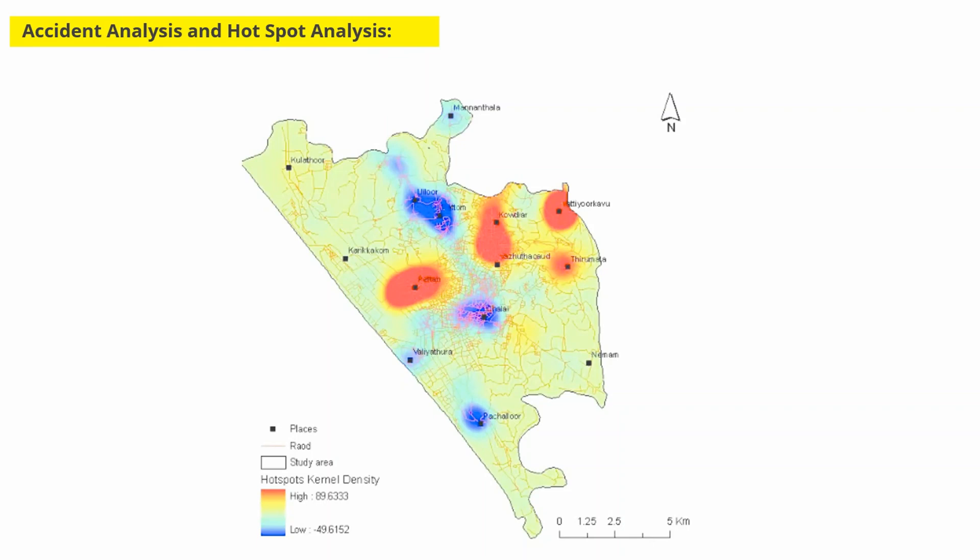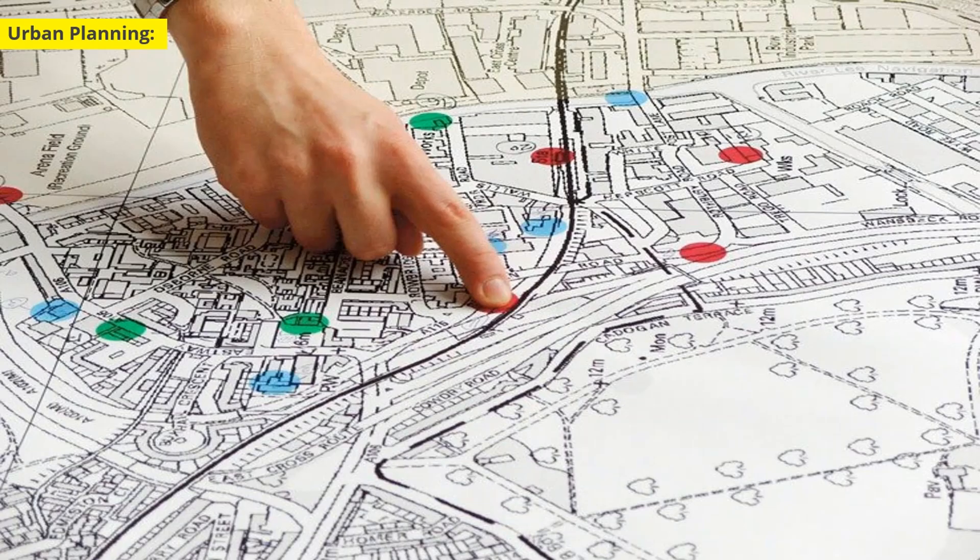Remedial measures can be planned by district administration to minimize accidents in different parts of the world. Road design is also very convenient using GIS. The knowledge of GIS and remote sensing can be incorporated in accident analysis and hot spot analysis.